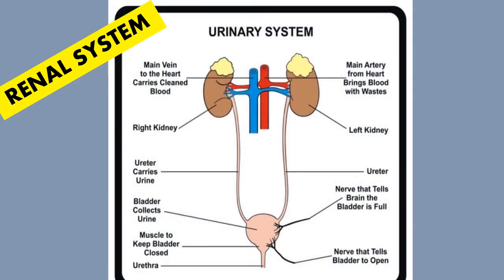So moving on with the video — the urinary system, we can call it the renal system as well. Let me point out where the pointer is. There are different parts of the urinary system: they involve kidneys, veins, and arteries. There are two different types — veins and arteries. You can see the main artery shown in red.